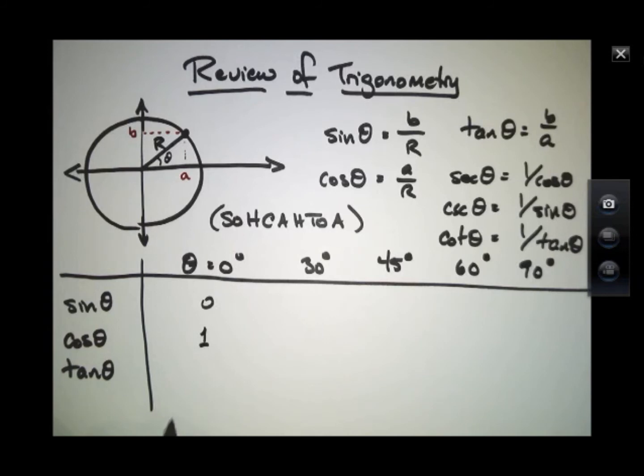And so the cosine becomes 1. The tangent is defined as the sine over the cosine, and so this becomes 0.